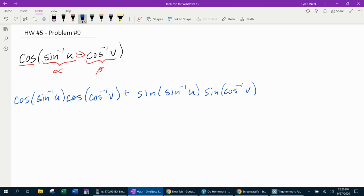And then I'm going to need to evaluate this. So the cosine of the inverse cosine canceled, and that leaves me with just v. So I know that that's going to be v times cosine of the inverse sine of u, whatever that is, plus, and then over here I know sine of inverse sine is going to cancel and leave me with u, times the sine of the inverse cosine of v, whatever that is.